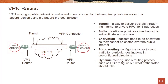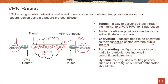What are some of the key characteristics? The first thing in a VPN is this thing called a tunnel. A tunnel is nothing but a way to deliver packets through the internet to RFC 1918 addresses — meaning private network addresses. There is authentication where you have to authenticate who you are. The really important piece is encryption: packets need to be encrypted so they cannot be sniffed over the public internet. There are also two different kinds of routing supported here — static routing, where you configure a router to send traffic for particular destinations in pre-configured directions, and BGP dynamic routing, where we use a routing protocol like BGP to figure out what paths traffic should take.